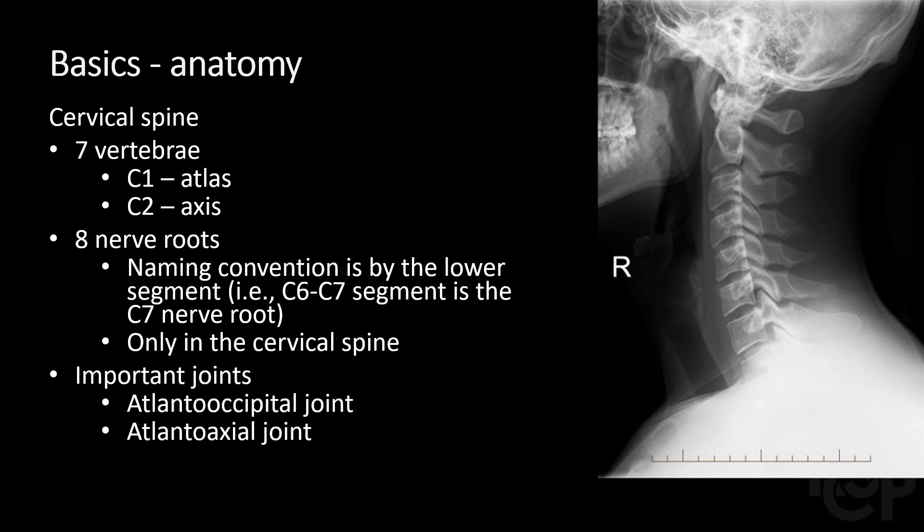For example, the nerve root in between C6 and C7 is referred to as the C7 nerve root. The cervical spine has two important joints: the atlanto-occipital joint, which is between the base of the skull and C1, and the atlanto-axial joint, which is between C1 and C2.